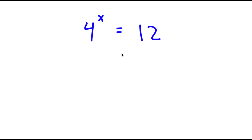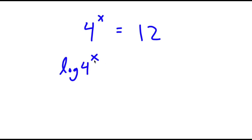In this problem, I have 4 to the power of x is equal to 12. To solve this, I'm going to first start by taking the log on both sides. Now I have log of 4 to the power of x is equal to log 12.